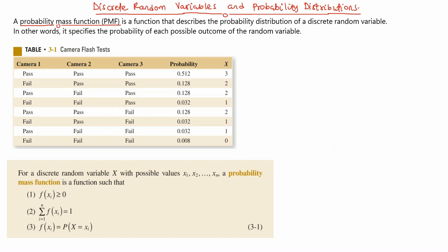A probability mass function, or PMF, is a function that describes the probability distribution of a discrete random variable. In other words, it specifies the probability of each possible outcome of the random variable. To break this down, assume you throw a fair die.